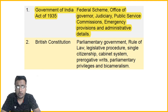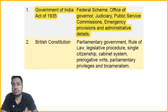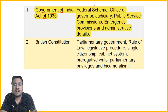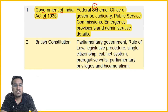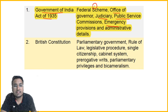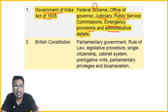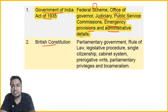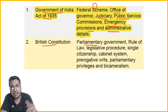Now let's look at various borrowings in our constitution. First, from the Government of India Act 1935, we borrowed a lot: the federal scheme — the center-state relationship, the office of the governor, the judiciary system, our Public Service Commissions like Haryana PSC and UPSC, emergency provisions, and administrative and bureaucratic structure.